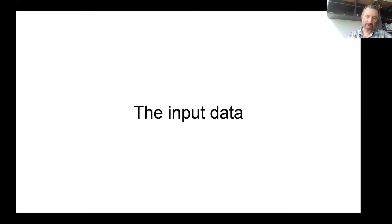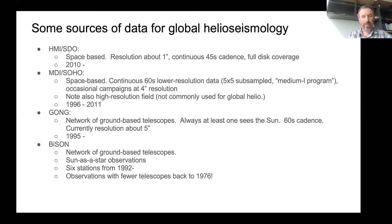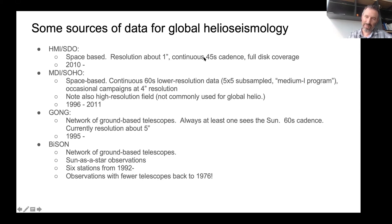But how do you actually measure anything? We have to talk about the input data. Here are some of the sources of data for global helioseismology. The HMI instrument on SDO — the Solar Dynamics Observatory — has been taking essentially continuous observations of the sun since 2010. It produces Dopplergrams at 45-second cadence, and these images cover the full disk. The MDI instrument on the SOHO spacecraft also produced essentially continuous 60-second data, though at somewhat lower resolution.